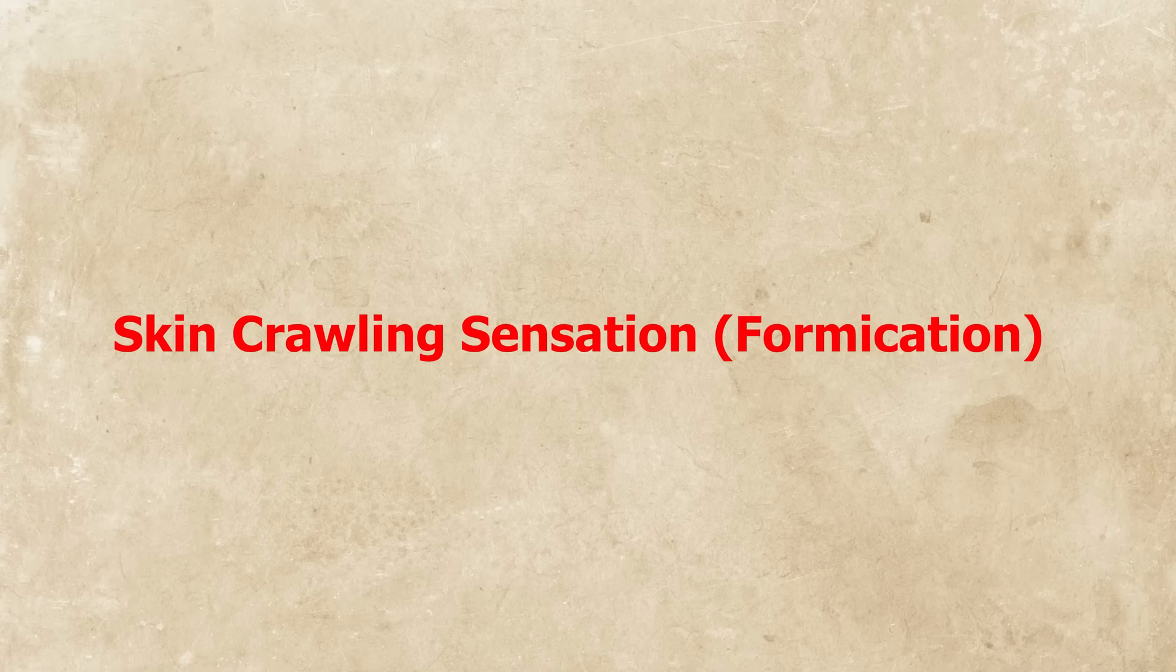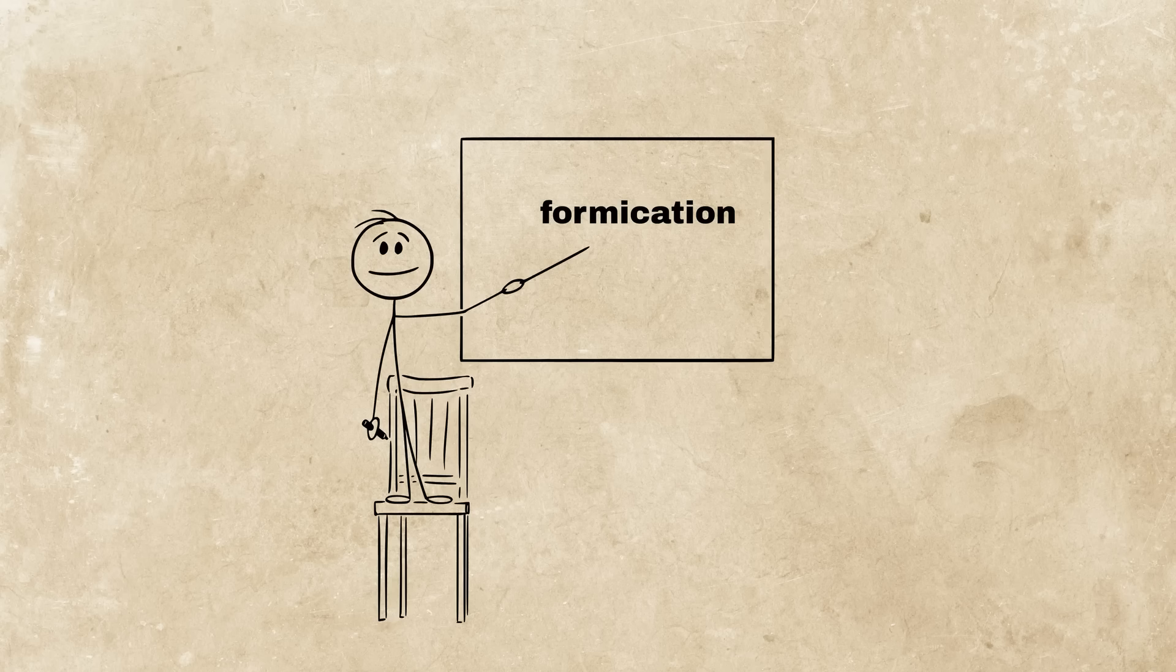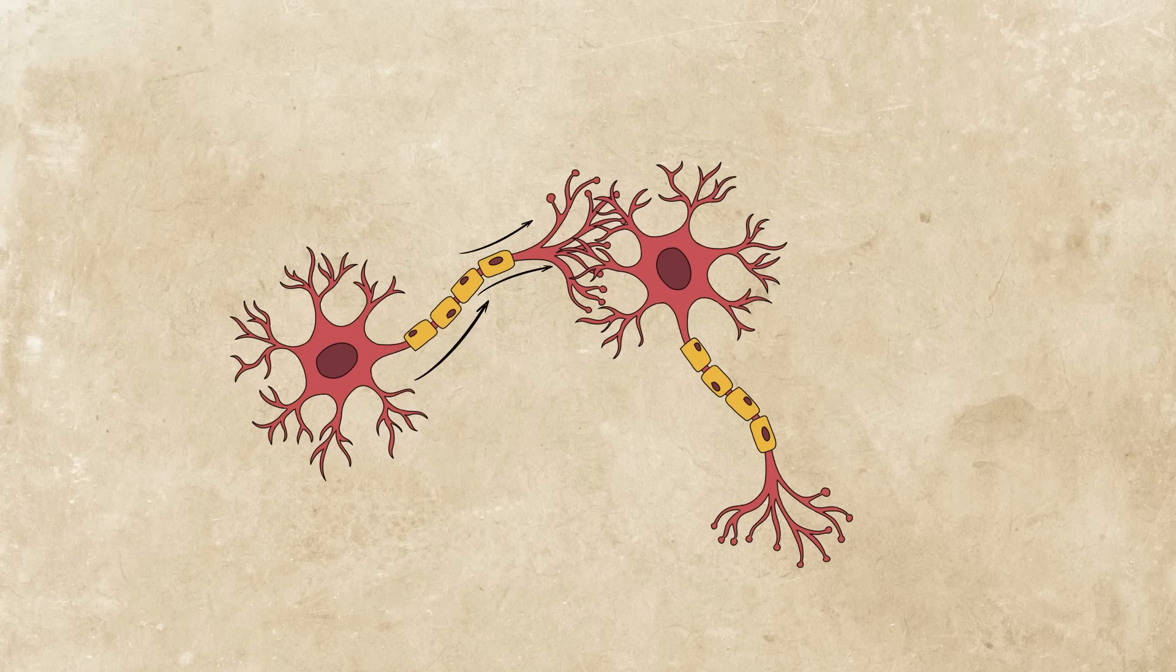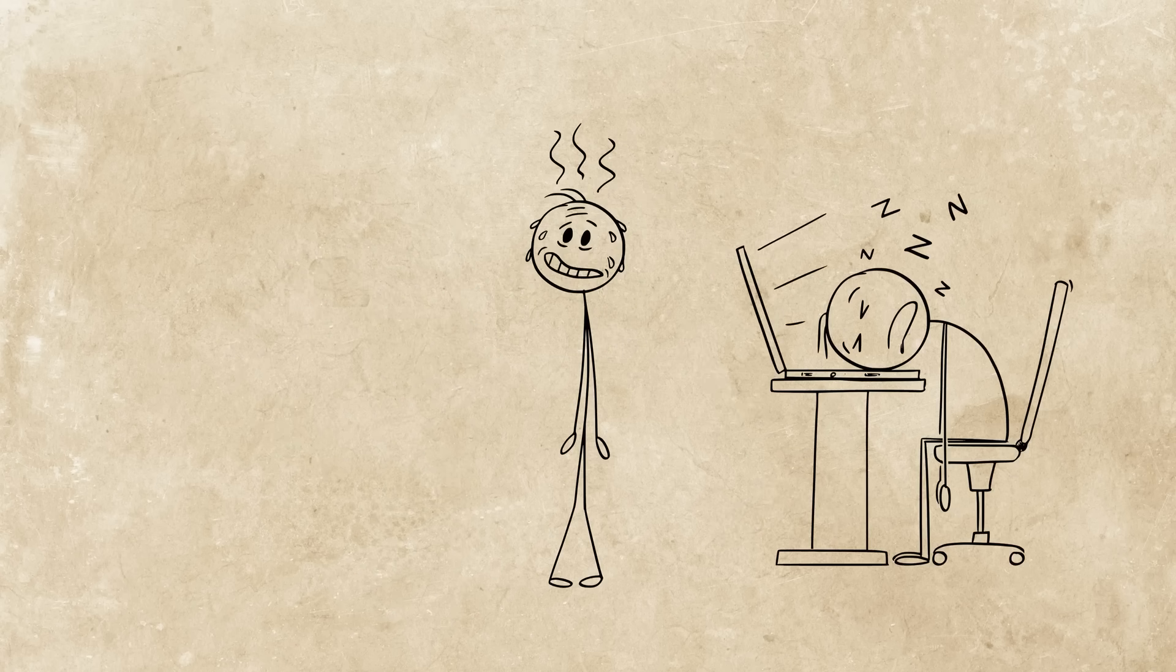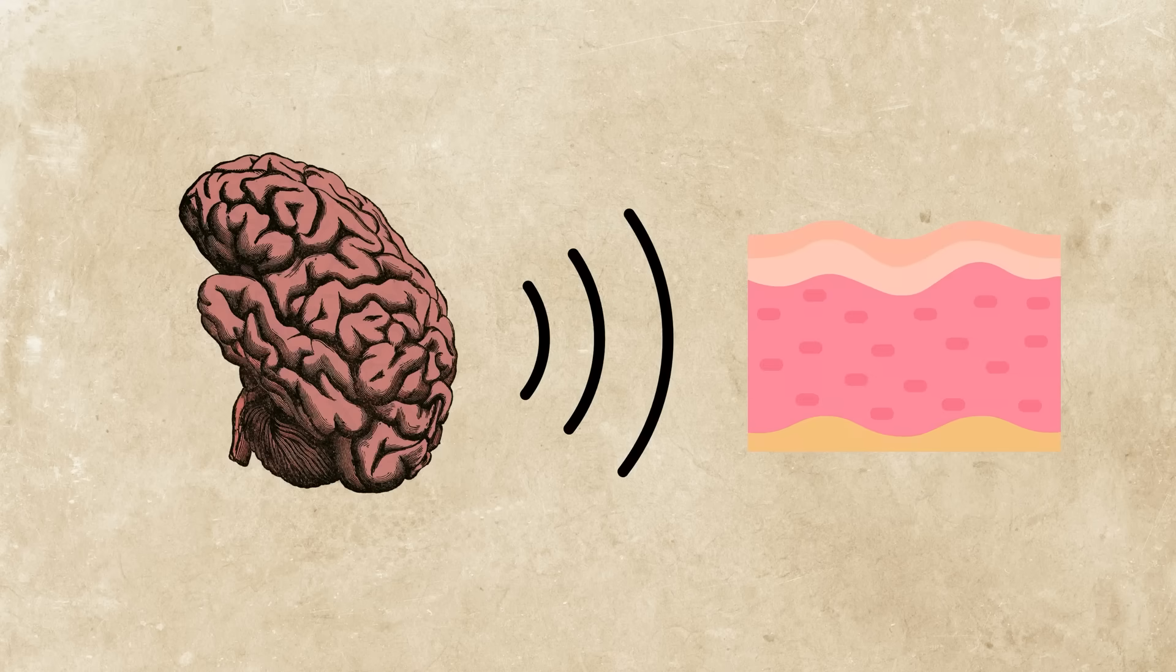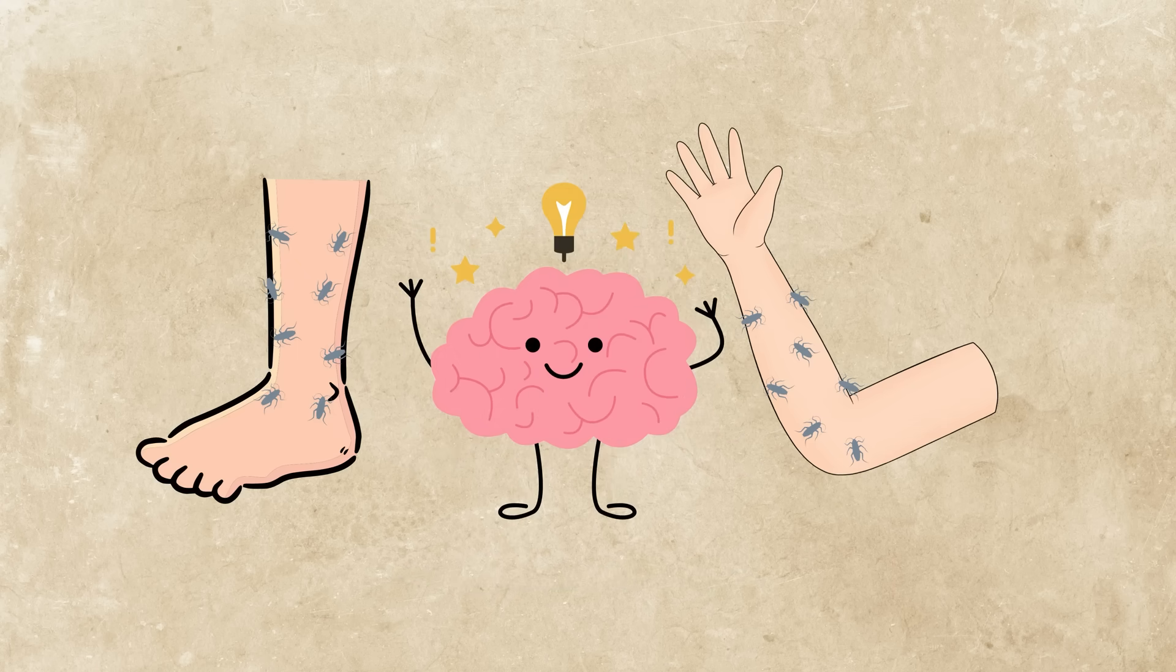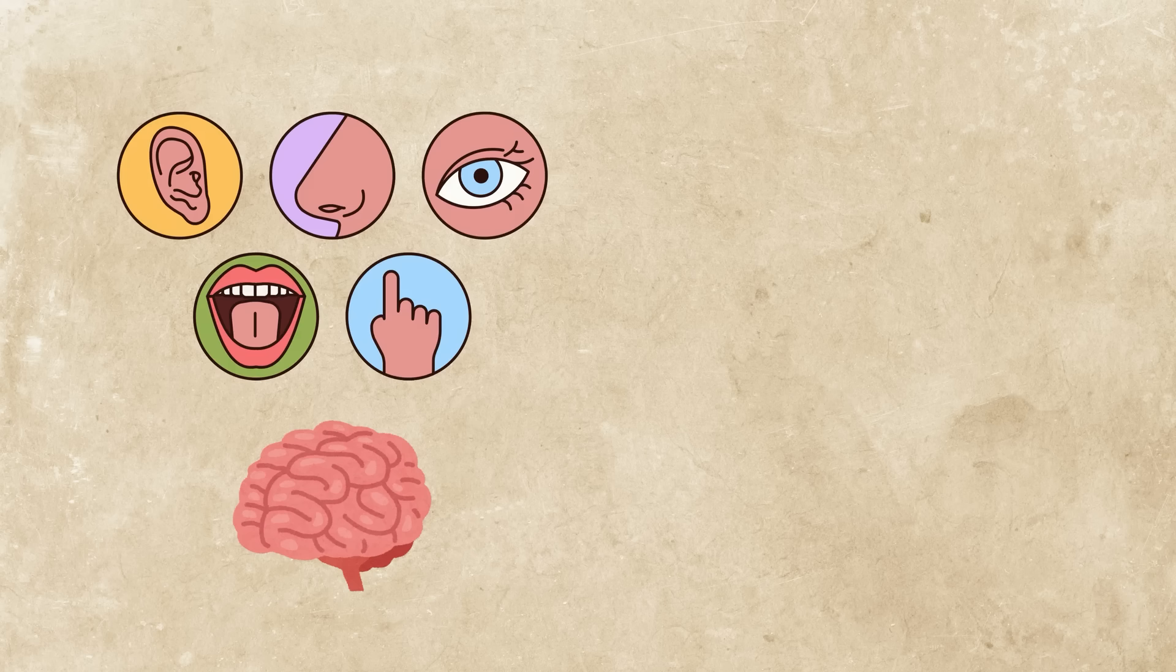Skin crawling sensation, or formication. Feel like bugs are crawling on your skin, but there's nothing there? That's called formication. It's a nerve signal misfire, often caused by anxiety, fatigue, or neurological change. Your brain receives a signal from the skin that doesn't make sense and interprets it as crawling or tingling. It's creepy, harmless, and feels like your sensory system is just making stuff up.